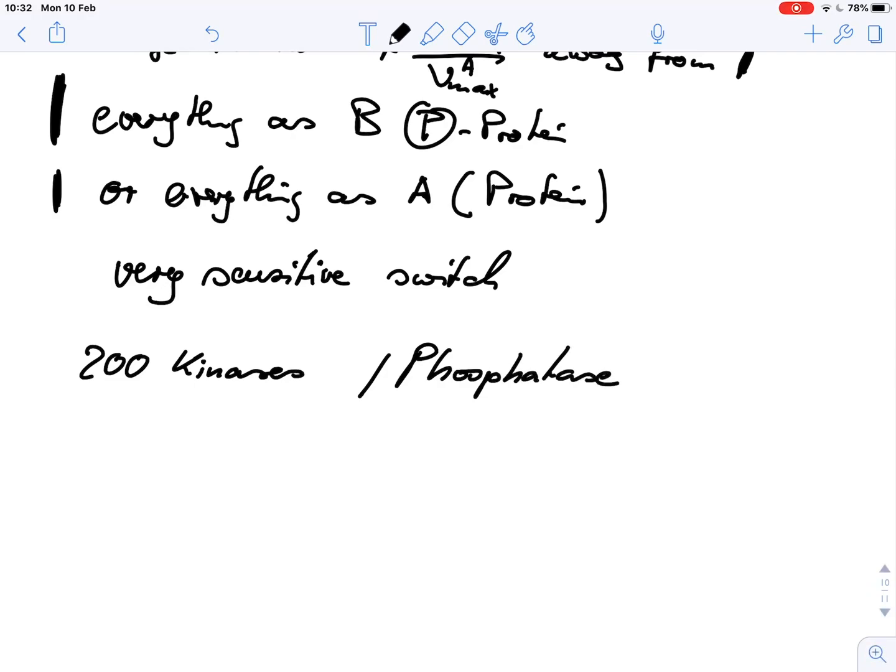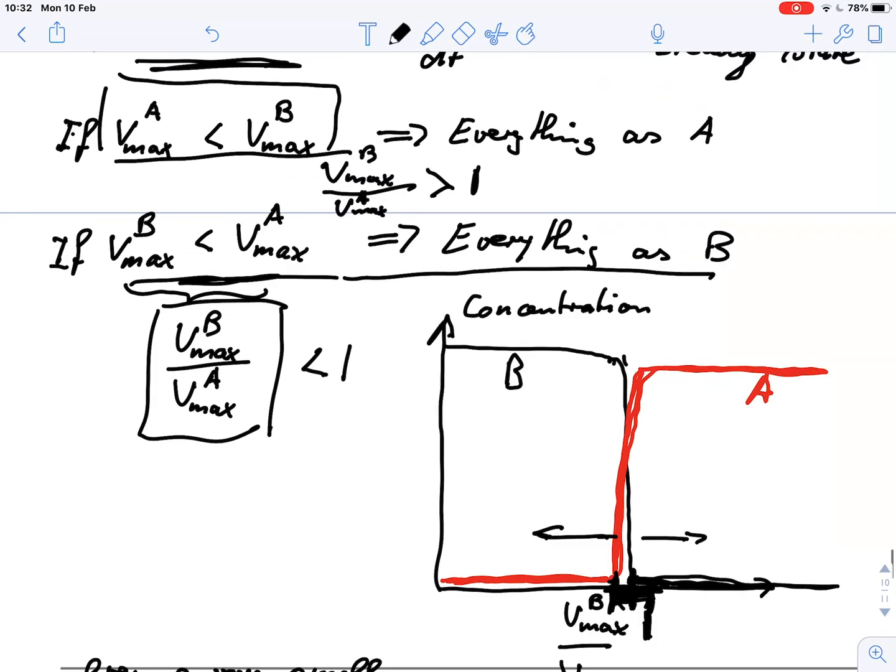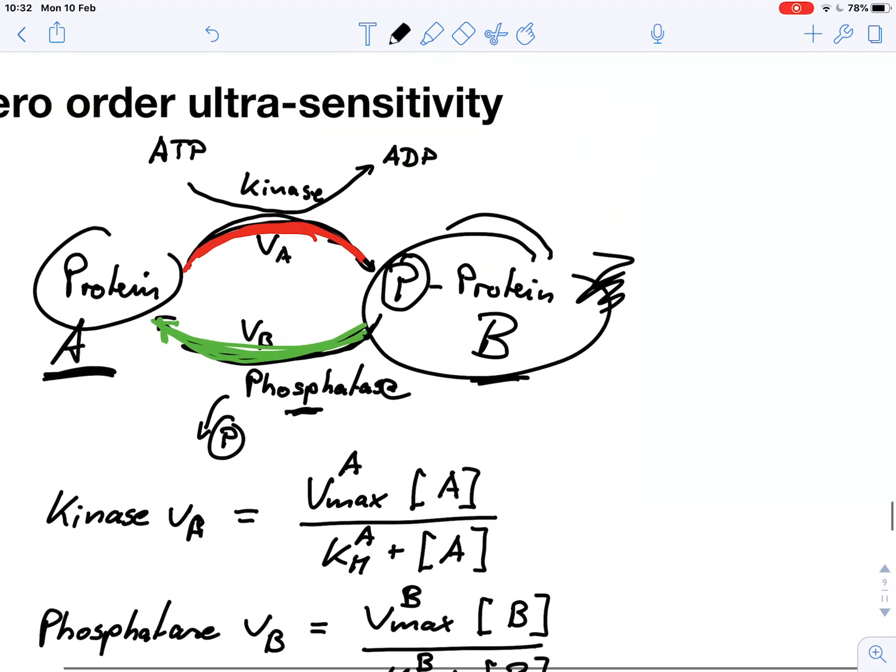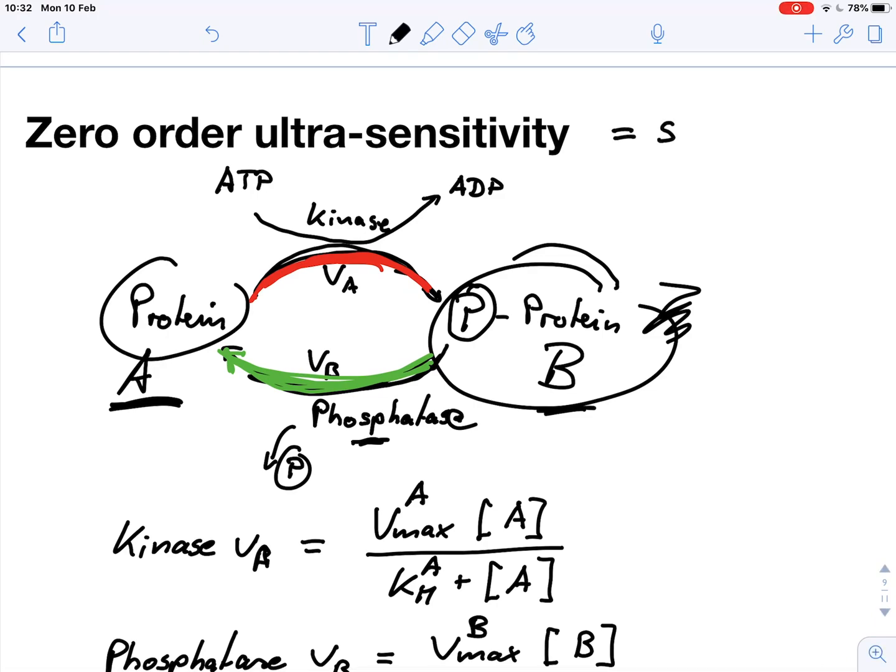So this ultra-sensitivity switch, this zero-order ultra-sensitivity, is a very elegant switch that allows us with minimum effort to move between two different states. So next time you see a system like a kinase and a phosphatase system, please remember we most likely have a really sophisticated switch system that allows fine regulation of metabolic pathways. I hope this makes sense and thank you for watching.